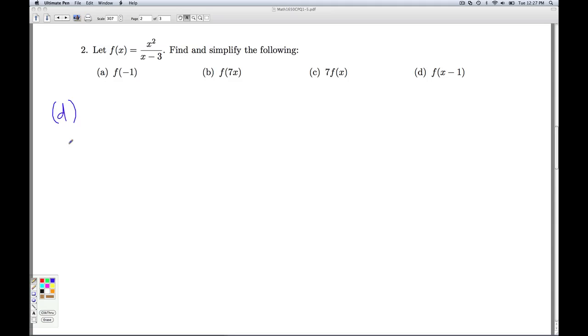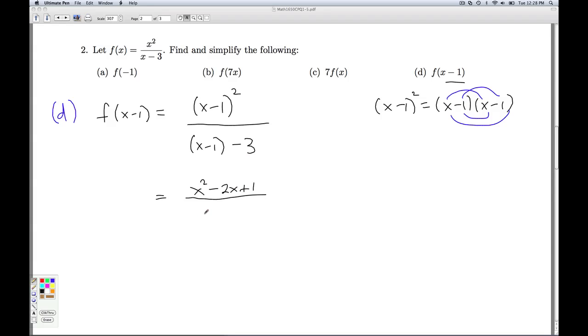Our last part, Part D, asks us to find f of x minus 1. So once again, every occurrence of x, I replace it with the quantity x minus 1. So I have x minus 1 quantity squared in the numerator, x minus 1 quantity minus 3 in the denominator. So we need x minus 1 squared. And folks, when in doubt, write it out. x minus 1 squared means x minus 1 times x minus 1. So you have to do your FOIL or the happy face method. I don't care how you do it. The point is you don't want to forget about that middle term. So the numerator is going to be x squared minus 2x plus 1. And I simplify the denominator and I get x minus 4. So that'll do it for number 2.